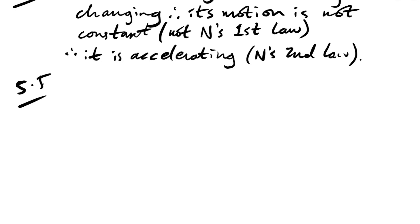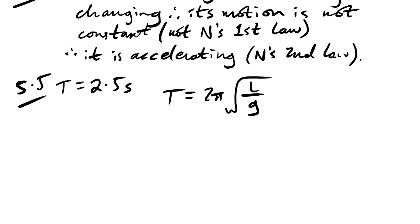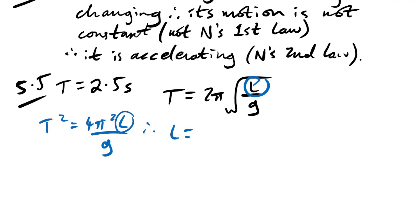Question 5.5: a simple pendulum swings in phase with the turntable completing one rotation every 2.5 seconds. Using T = 2π√(L/g), rearranging gives L = gT²/(4π²) = 9.8×2.5²/(4π²) ≈ 1.55 m.